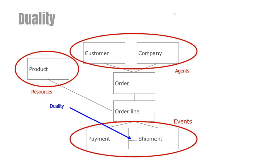We now return to the previous example where we had identified resources, events, and agents. There is one special relationship between events that always occurs in business contexts. Here, this relationship is between a payment and a shipment. It expresses that these two events should always occur as a pair — it should never be the case that just one of them occurs. If the company delivers a product to the customer, then it should have a compensation in the form of a payment from the customer. Similarly, if the customer pays, then she should have a product delivered. So there is a relationship between payment and shipment, binding them together, and we call this a duality relationship.